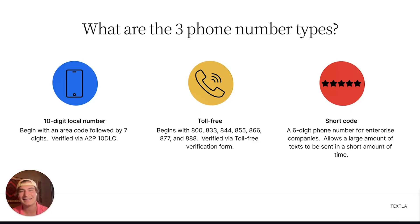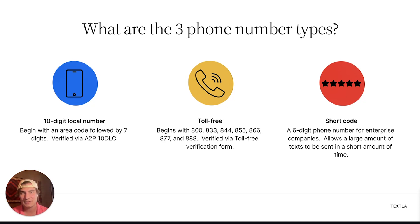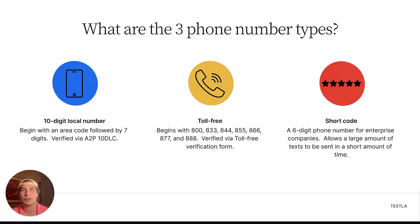First is a 10-digit local number. This is going to begin with an area code, followed by seven digits, and it's verified via A2P 10DLC. That's most likely what your mobile cell phone number is.